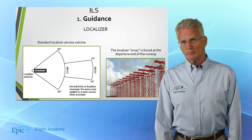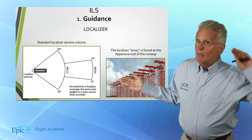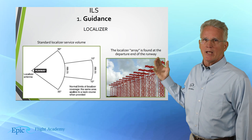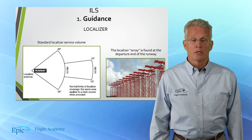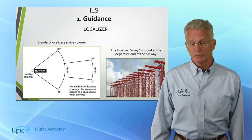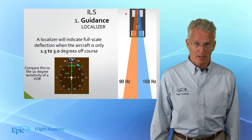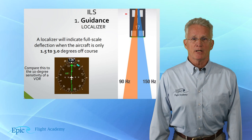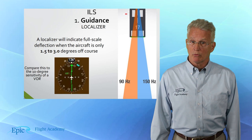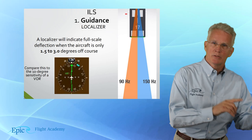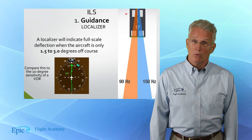This diagram is from the AIM Chapter 1, and it's a graphical depiction of what that localizer broadcast looks like. Notice 35 degrees left or right out to 10 nautical miles, and 10 degrees left or right out to 18 nautical miles. That localizer will indicate a full-scale deflection when the aircraft is only one and a half to three degrees off course. Compare this to the 10-degree sensitivity of a VOR, and you can see the localizer is, of course, much more sensitive.